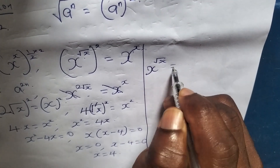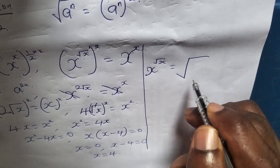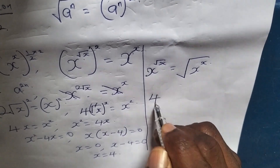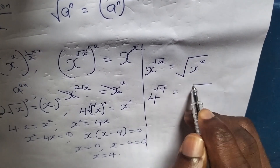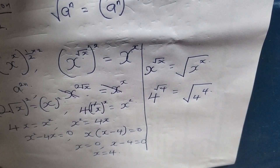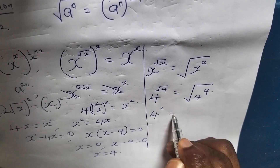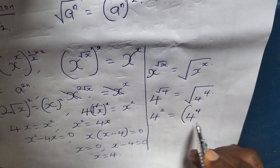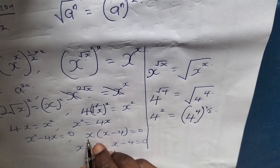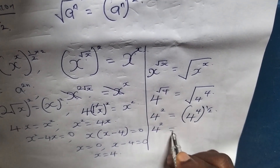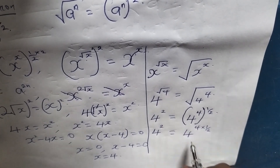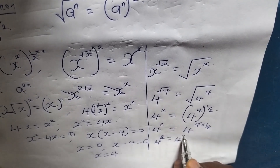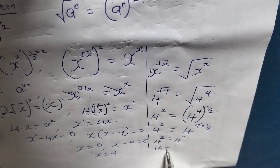We are having x to the root of x is equals to root of x to the power of x. With our value of x equal to 4: we are having 4 to the root of 4 is equals to root of 4 to the power of 4. We are now having 4 to the power of 2 is equals to 4 to the power of 4 times 1 over 2, and this will cancel. So we are having 4 to the power of 2 is equals to 4 to the power of 2, giving us 16 equals 16.